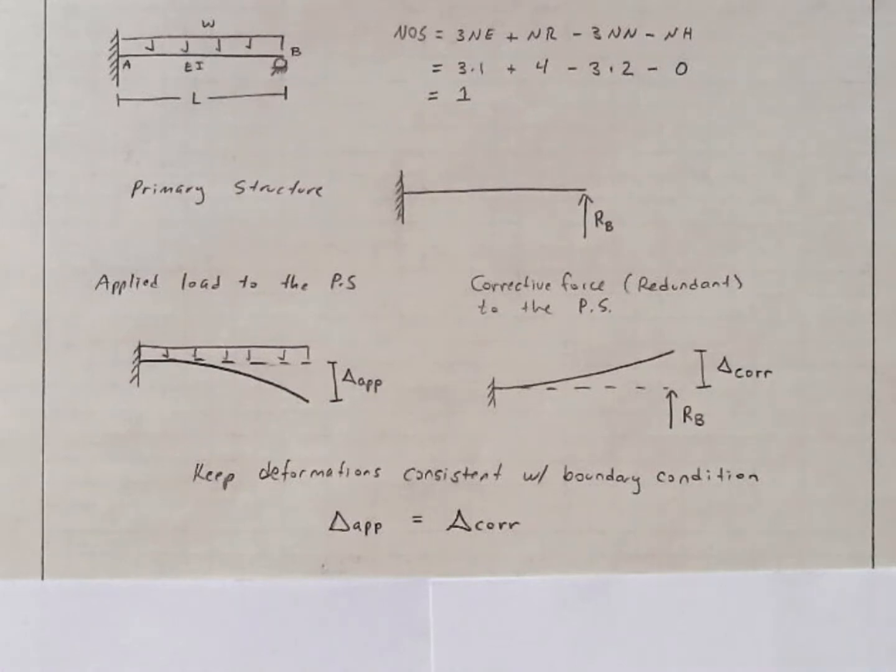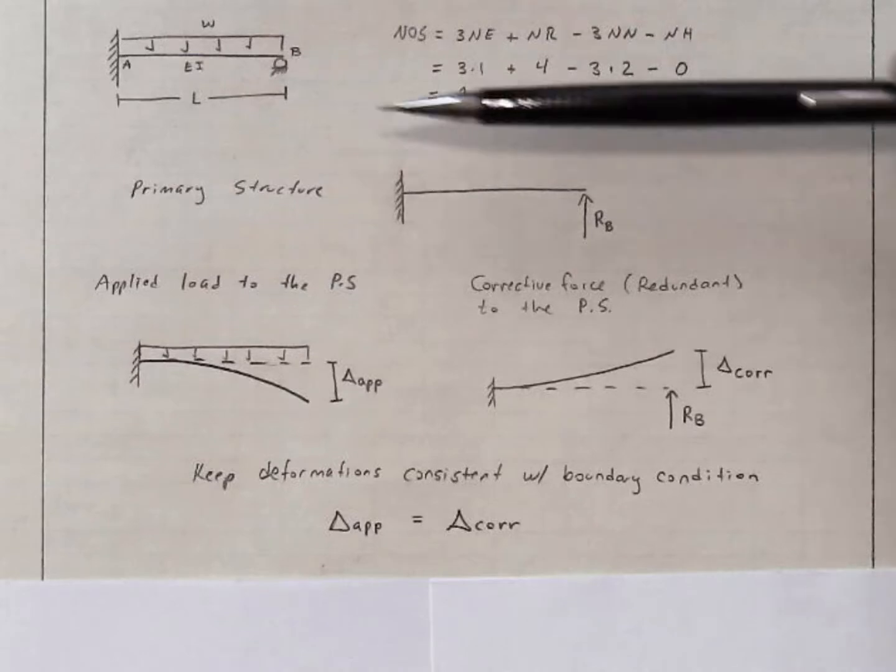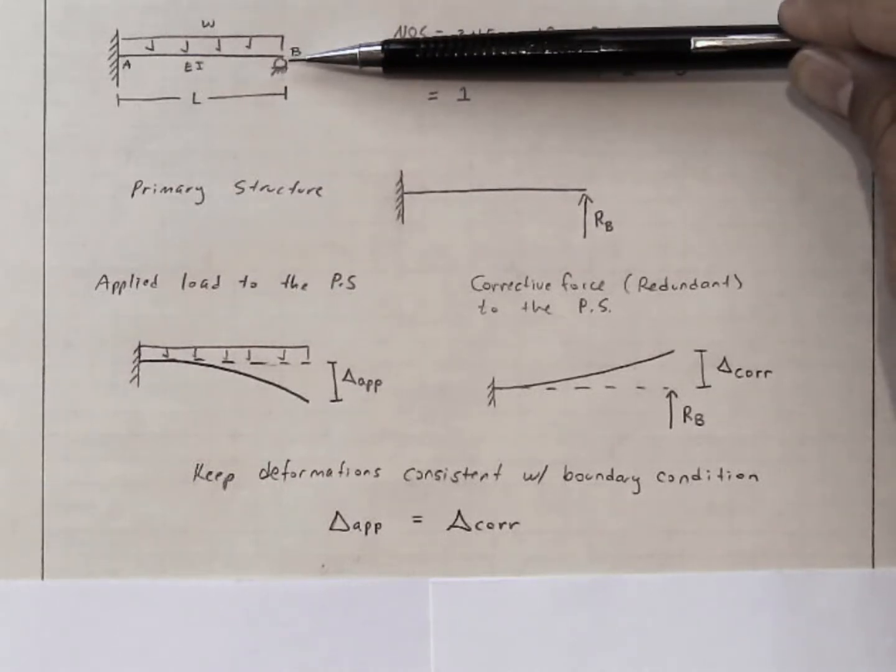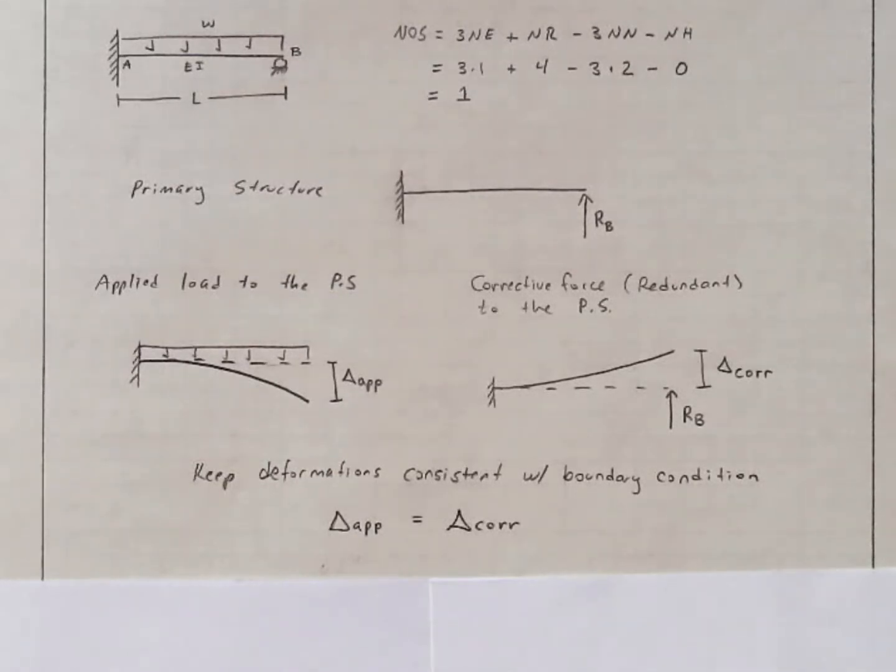Mathematically, as I stated in words before, this condition means that delta applied has to be equal to delta corrective so that the total value of deflection at the tip is zero and is consistent with the roller boundary condition.